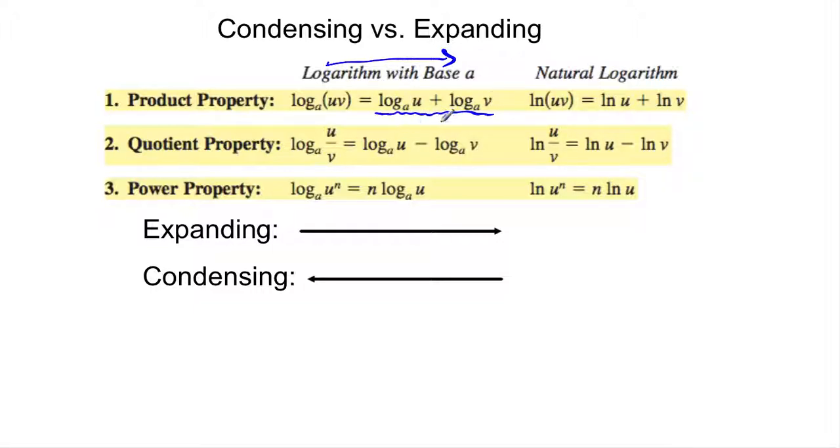If we're condensing, we're going from right to left. So we would take this sum and we would multiply those values and write it as one log. There are benefits to why we would condense versus why we would expand. But basically, if you memorize these three properties, if you know them, whenever you expand,